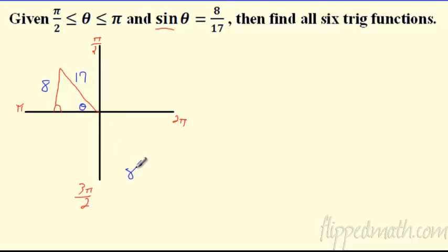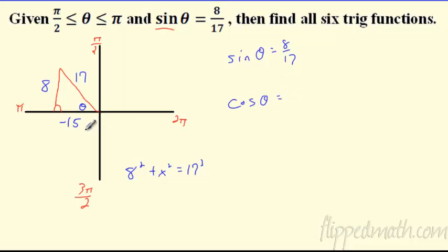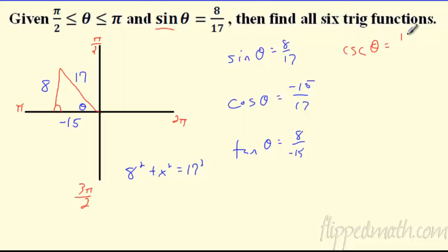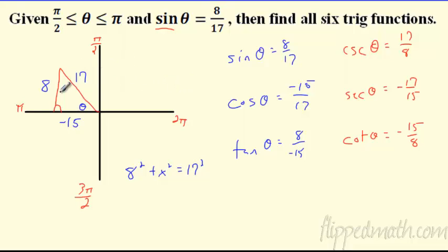Using the 8-15-17 Pythagorean triple, the missing side is 15. Since we're in quadrant two, the horizontal direction is negative. So cosine is negative fifteen over seventeen, and tangent is eight over negative fifteen. The reciprocal functions: cosecant is seventeen over eight, secant is negative seventeen over fifteen, and cotangent is negative fifteen over eight. Sometimes you'll get radicals in there — just follow your simplification rules.